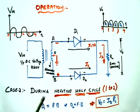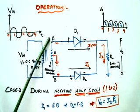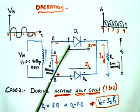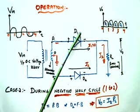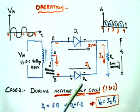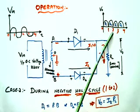Case 2: During the negative half cycle (range 1 to 2), end A becomes negative and end B of the secondary winding becomes positive. Negative going to the positive terminal of D1 makes D1 reverse biased. Positive going to the positive terminal of D2 makes D2 forward biased. Current I1 in D1 is zero, and current I2 flows through D2 and through the load resistor RL. Output V0 = I2 × RL. So for the negative half cycle (1 to 2), output is obtained due to diode D2.